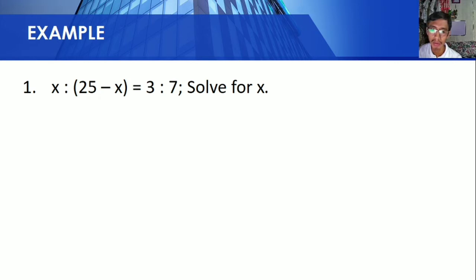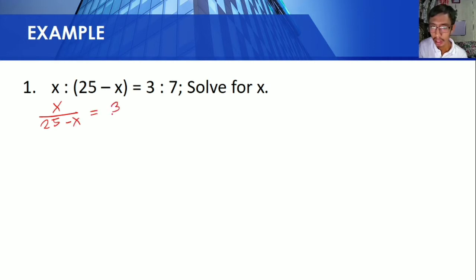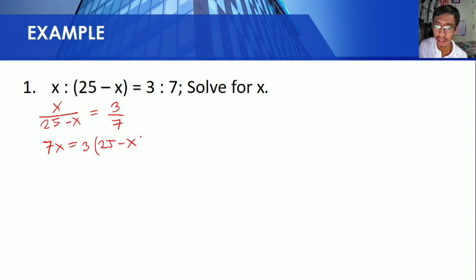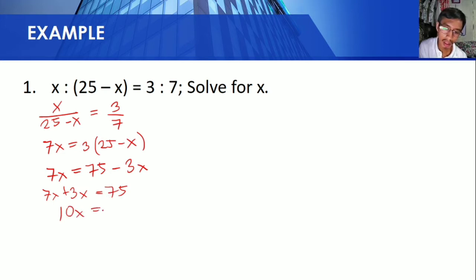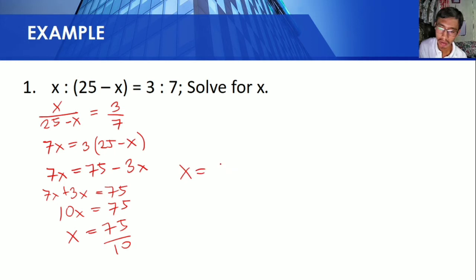Example number 1: X is to 25 minus X is equal to 3 is to 7. Solve for X. We can write this as X over 25 minus X is equal to 3 over 7. Cross multiply: 7X is equal to 3 times (25 minus X), so 7X is equal to 75 minus 3X. Transposing, 7X plus 3X is equal to 75, so 10X equals 75. Therefore, X is equal to 75 over 10 or X equals 7.5.